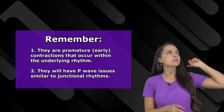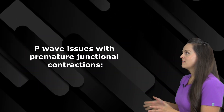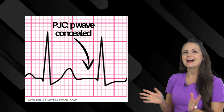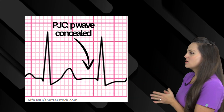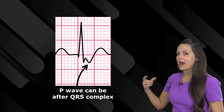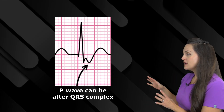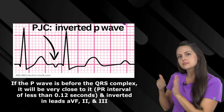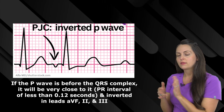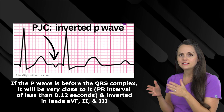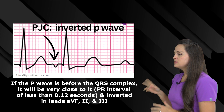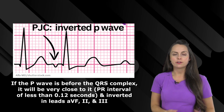The issues that the P wave is going to have could be any of the following. Number one, that P wave can be concealed — you're not going to see it, it's hiding somewhere within that QRS complex. Or the P wave could be after the QRS complex, or it could be before it. If it's before, it's going to be very close to that QRS complex, leading the PR interval to be less than 0.12 seconds. And if you look at leads AVF, II, and III, it's going to appear inverted.